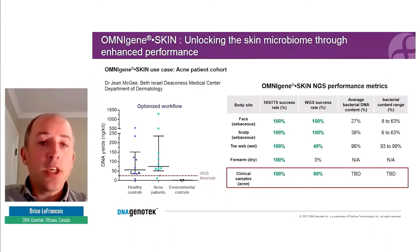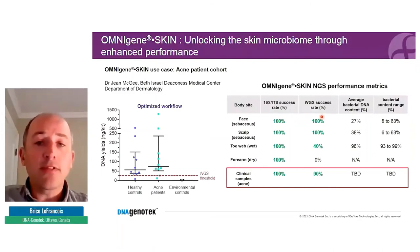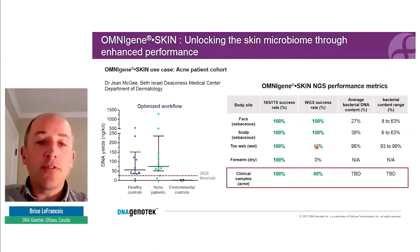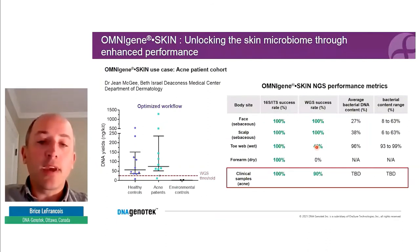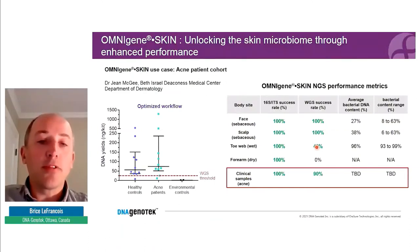100% of samples put through the amplicon sequencing pipeline amplified well and well above the environmental control. For WGS success rate, for higher biomass sites such as face and scalp — both sebaceous — the vast majority of samples pass. Toe web samples are very donor dependent, but we're seeing good results with almost 50% passing. And for the clinical acne cohort, 90% of samples qualified for shotgun sequencing.